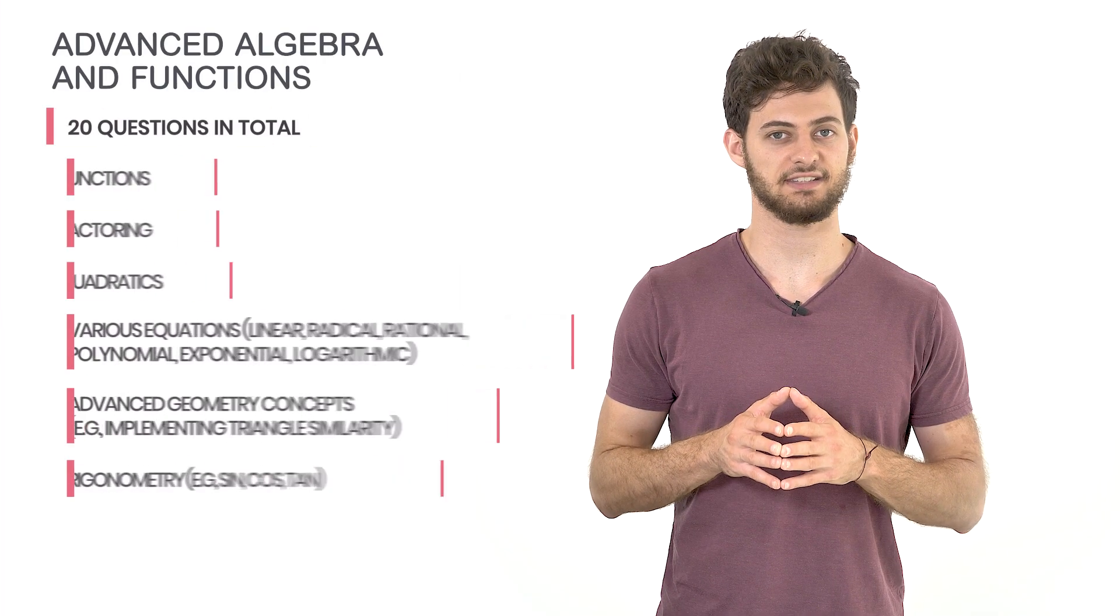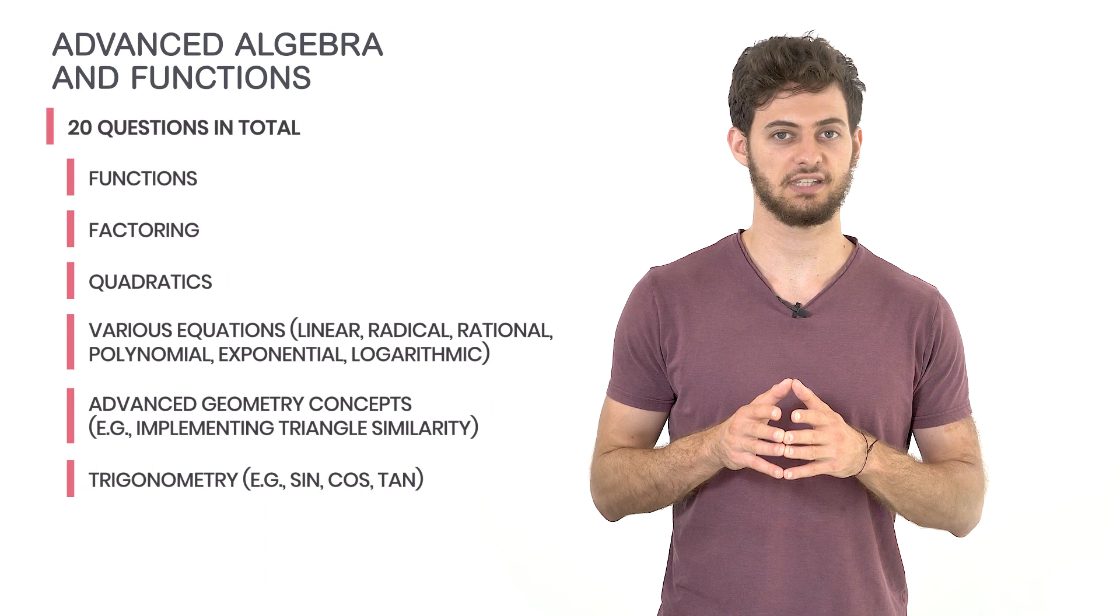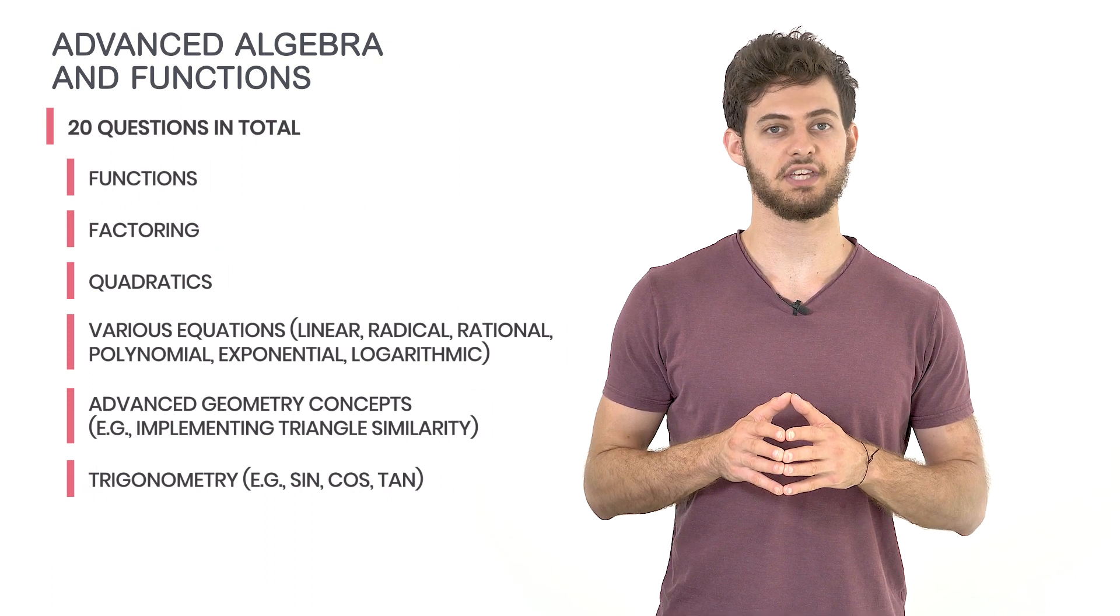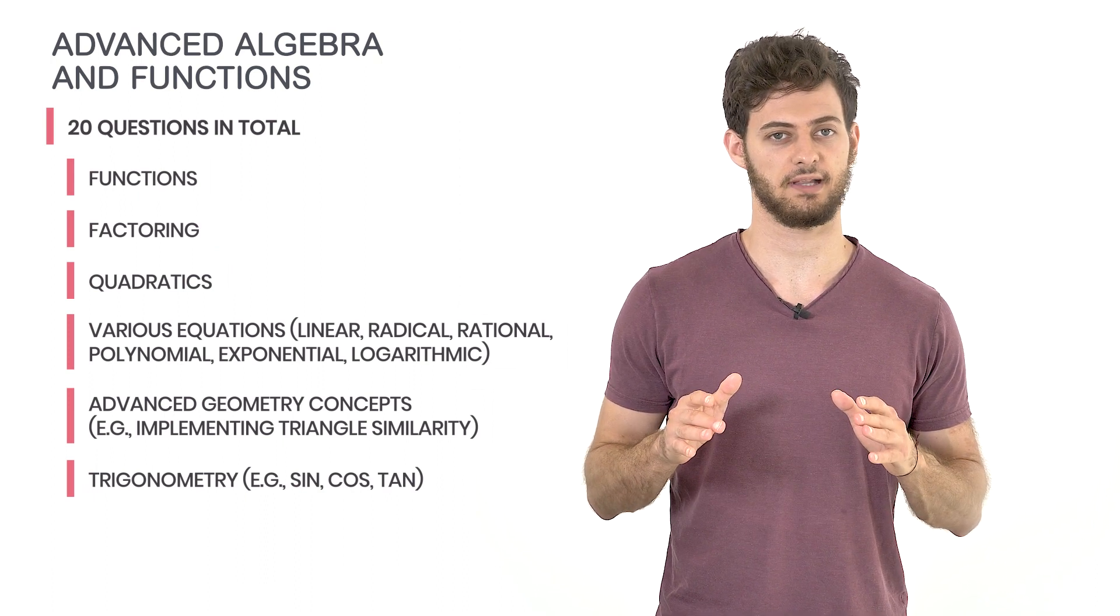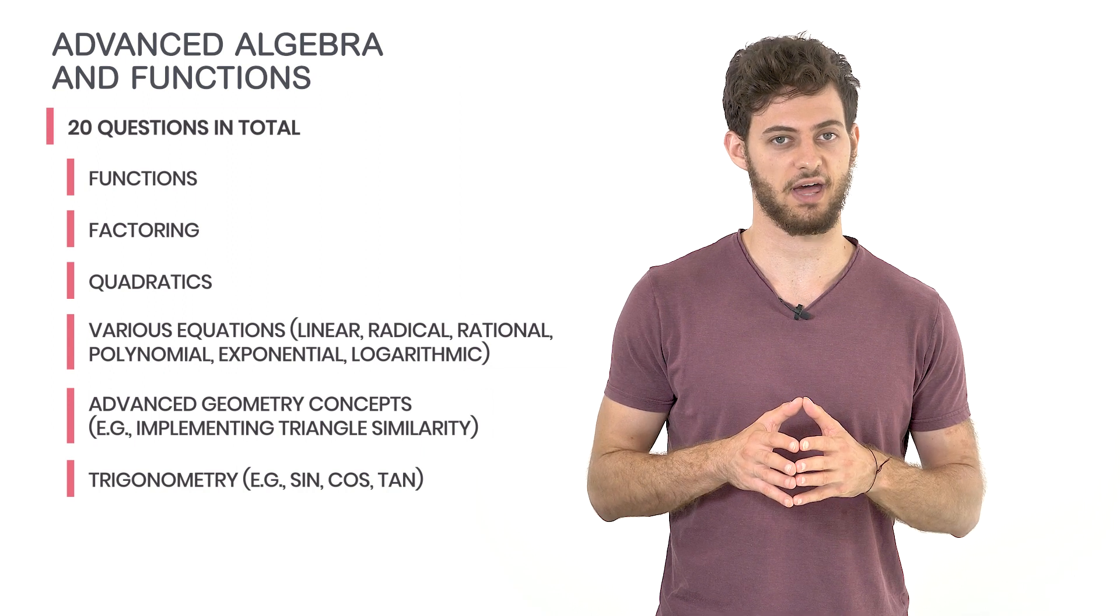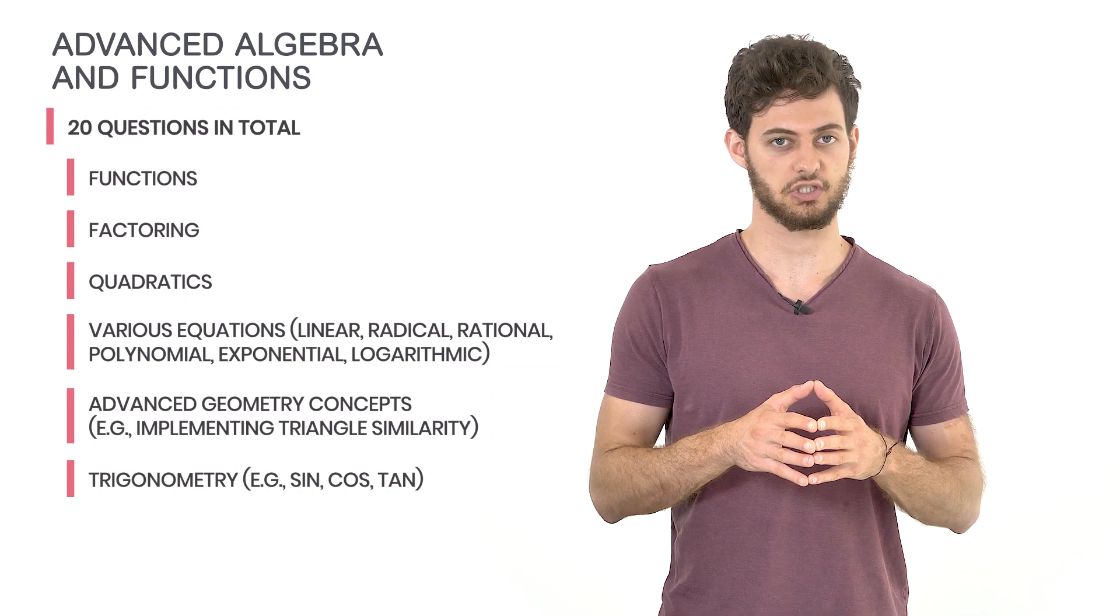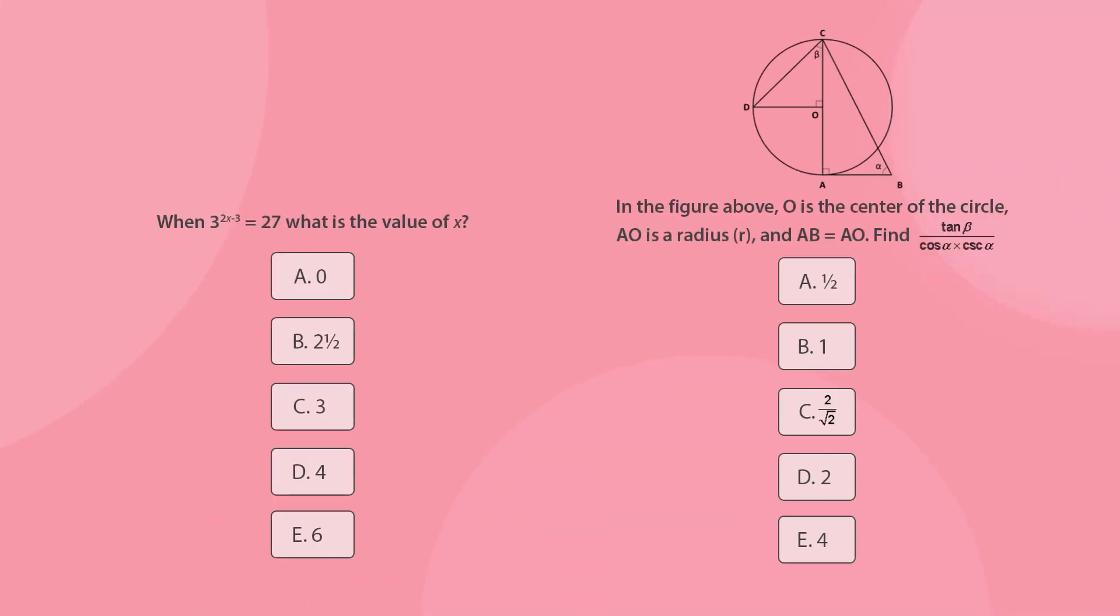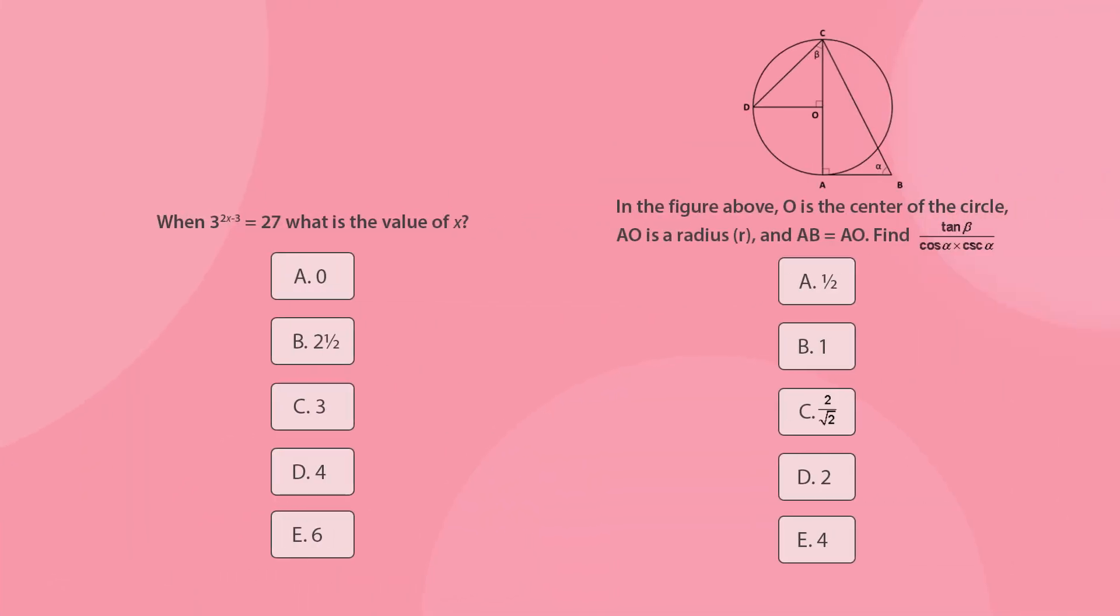The next section is Advanced Algebra and Functions, and it contains 20 questions. This section is very diverse as well, and it tests knowledge of advanced math concepts, such as functions and trigonometry. Make sure you master the arithmetic and quantitative reasoning sections first, as they are the basis for the material of this section. Here are two typical questions you may want to try. Pause the video and try to answer them.